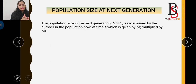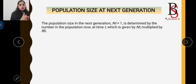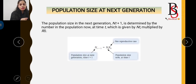The population size at the next generation is represented by Nt+1. It is calculated by multiplying the current population size Nt by the net reproductive rate R0. So the formula is: Nt+1 = Nt × R0.